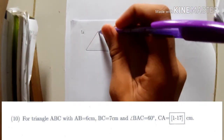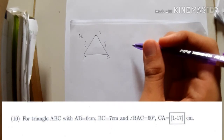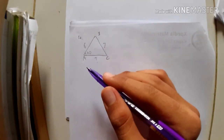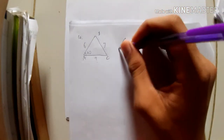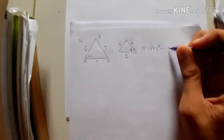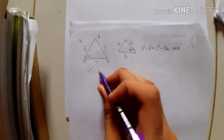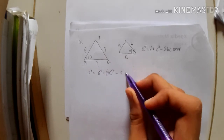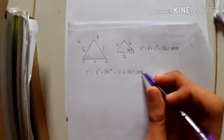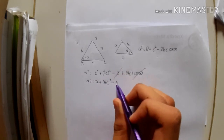Number ten: we have triangle ABC where AB = 6, BC = 7, and angle BAC = 60°. We need to find CA. Using the cosine law: BC² = AB² + CA² - 2·AB·CA·cos(BAC). Substituting: 49 = 36 + CA² - 2(6)(CA)·cos(60°). Since cos(60°) = 1/2, this simplifies to 49 = 36 + CA² - 6·CA, giving CA² - 6·CA - 13 = 0.